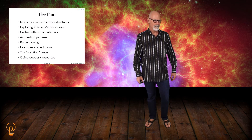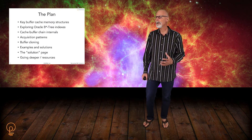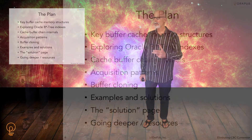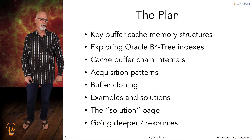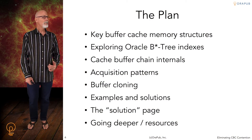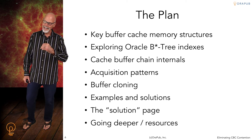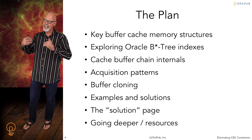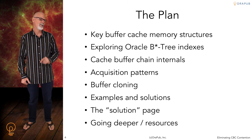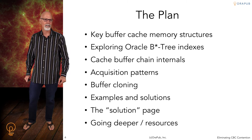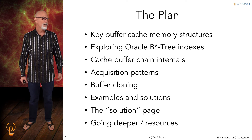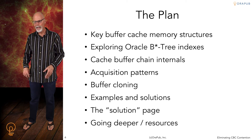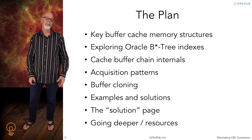So what's the plan for this seminar? First, we're going to quickly talk about the key buffer cache memory structures — the cache buffer chains, the LRUs, and the write list — and we're going to focus on the cache buffer chains. Next, we're going to focus on Oracle's B*tree indexes. It may seem like a deviation, but when we get to the end of the seminar, you're going to realize how important it is to understand Oracle's B*tree indexes — how they grow, split, and all that kind of stuff. Then we're going to get into just the raw cache buffer chain internals: the chains, the buckets, the hashing, and all that kind of stuff.